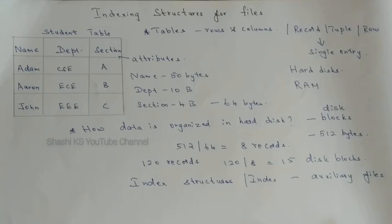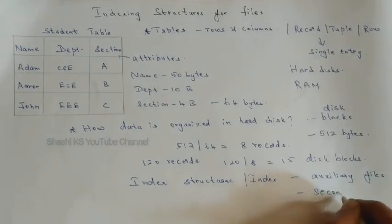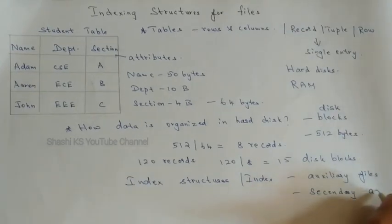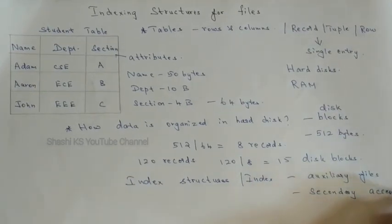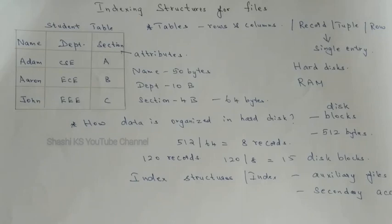Index structures are additional auxiliary files which reside on the hard disk to speed up the retrieval of records in response to certain search conditions. When you think of an index, just imagine the index of a book — you look for keywords in the index and it gives you the page number where that keyword is present. The same concept is applied here. Indexes provide secondary access paths, meaning they do not affect the physical placement of records in the primary data file on the disk.